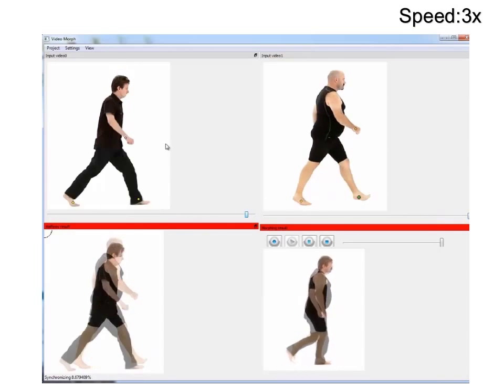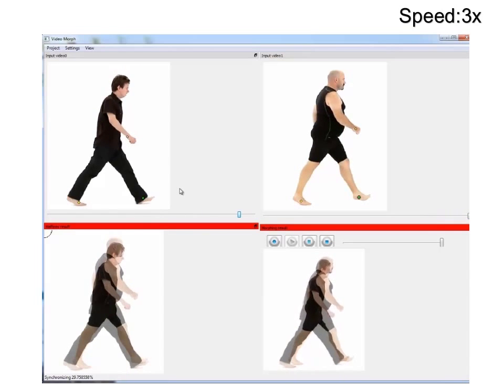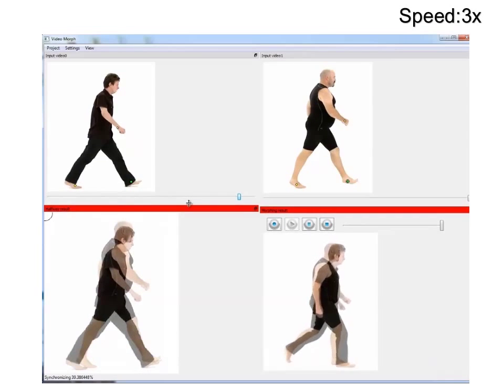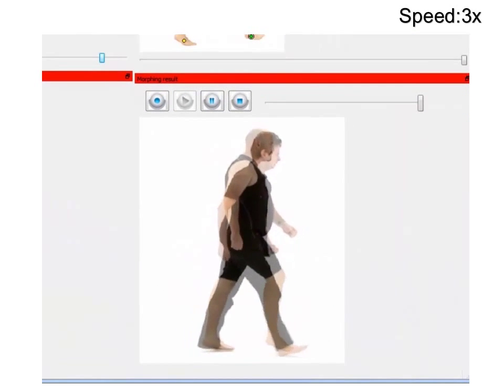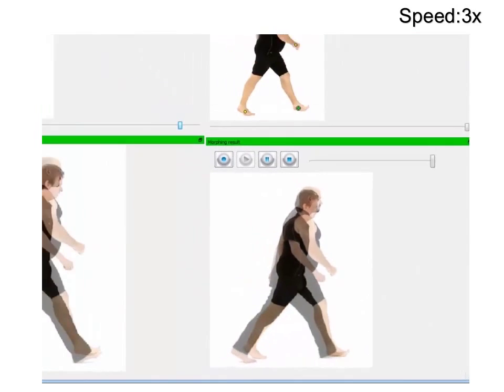During this process, the system is continuously running the temporal synchronization in the background and providing the current results in the bottom right. Once the user is satisfied with the result, it is time to move to stage two.